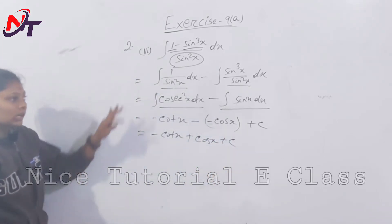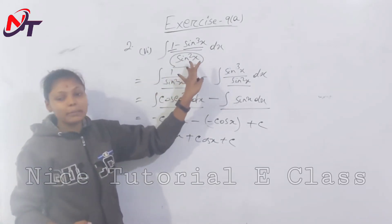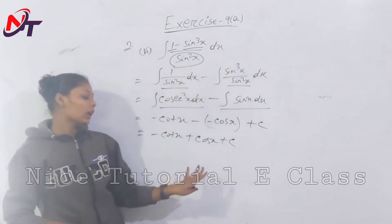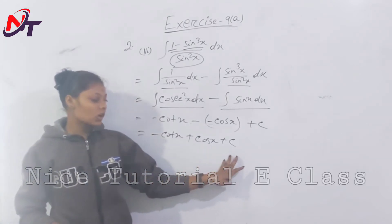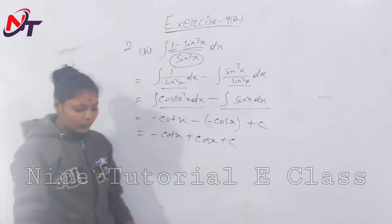So integration of 1 minus sin square x divided by sin square x dx equals minus cot x plus cos x plus c.